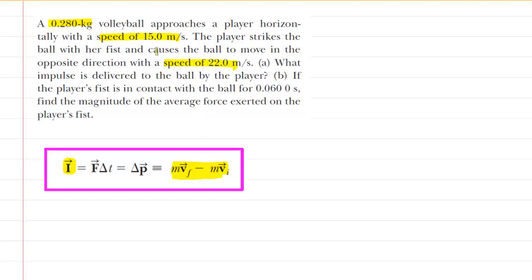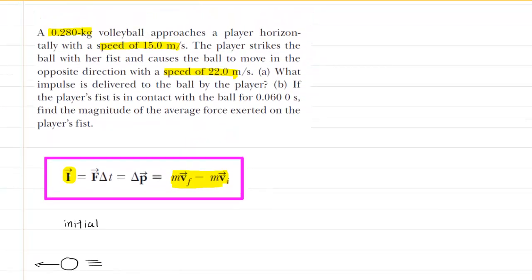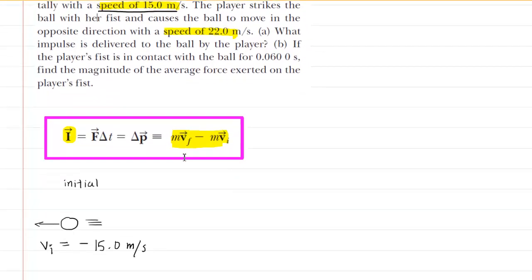But we have to be careful about translating those speeds into the correct velocities. To do that, we're going to draw a picture. Here is the picture down here. Even though the question says the speed of the ball is 15 meters per second as it approaches the player,